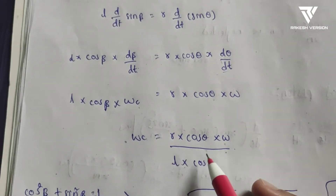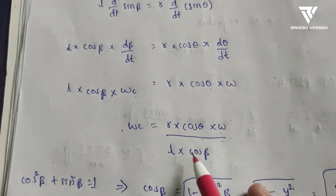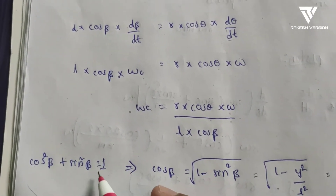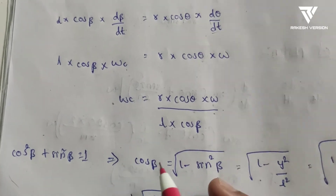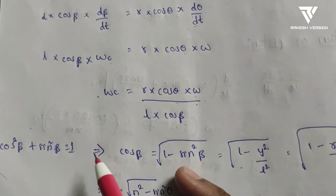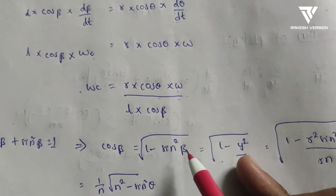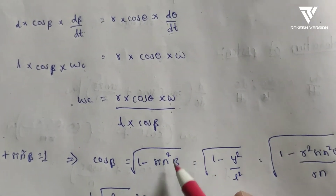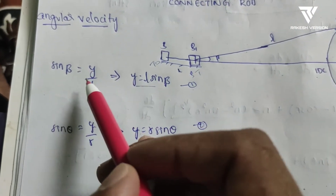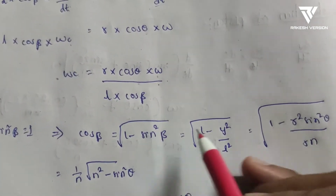To find cos β, we use the identity cos²β + sin²β = 1, which gives cos β = √(1 − sin²β). We know that sin β = y/L from the initial geometry.